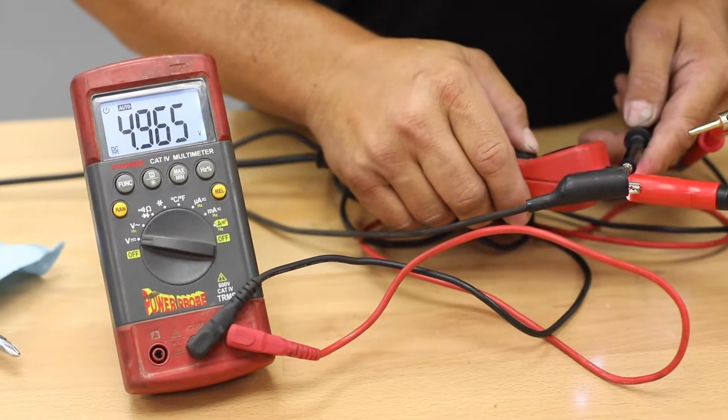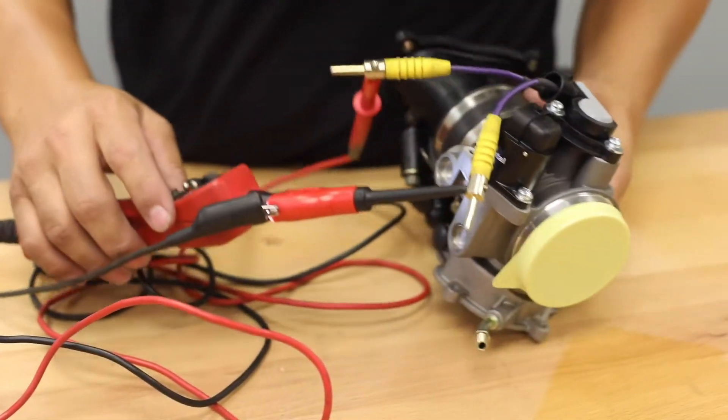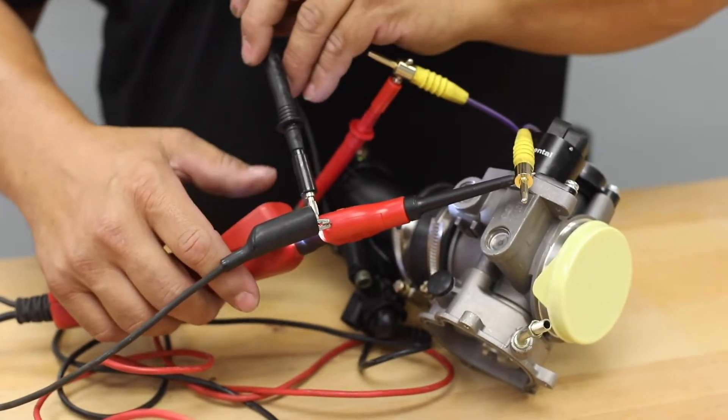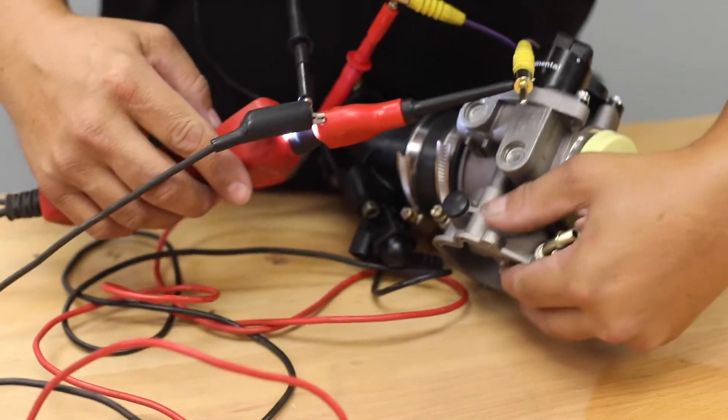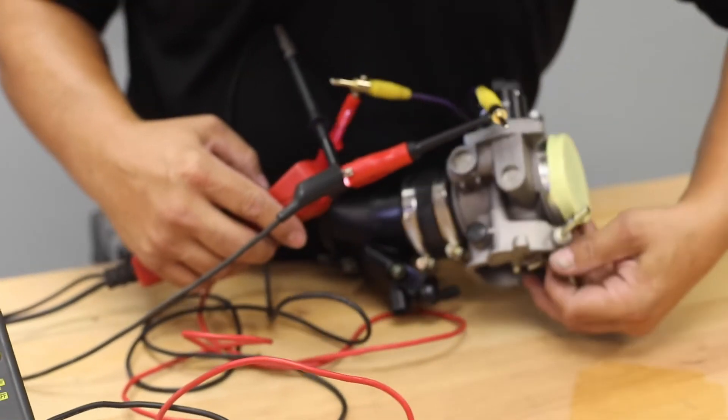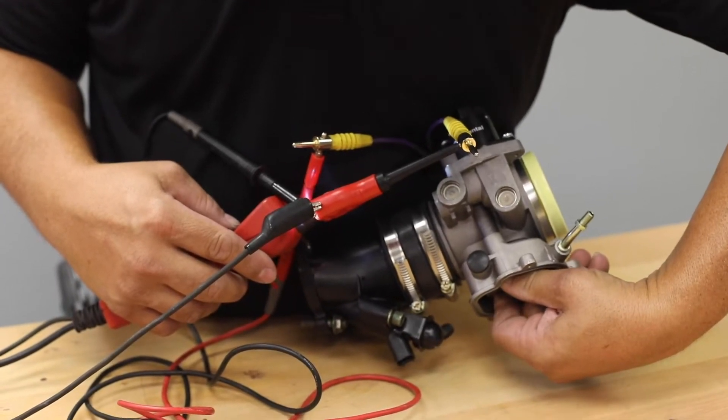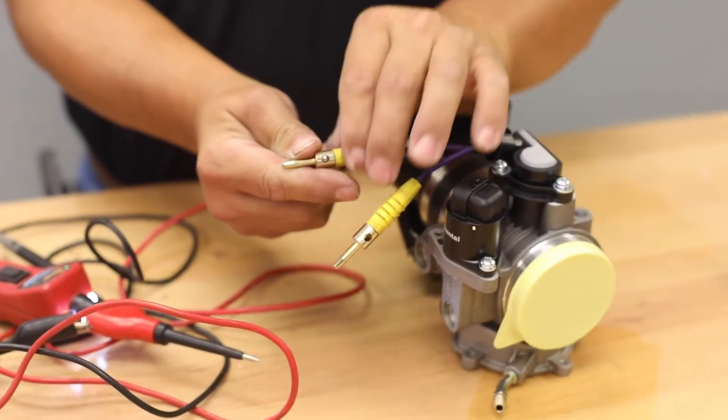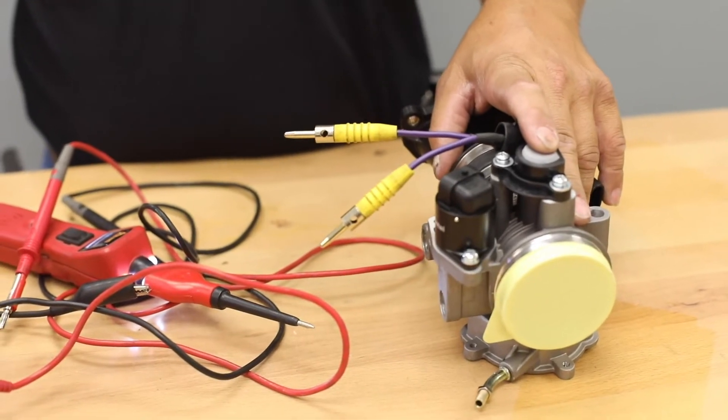And you see we've got 4.9 volts. Okay, if we turn this, which I don't know if I can do this. Okay, the 4.9 volts tells you that you are receiving a signal out of your potentiometer back to your ECU.